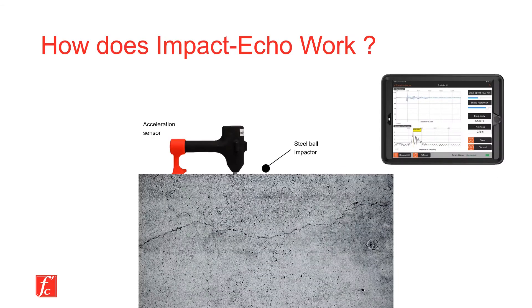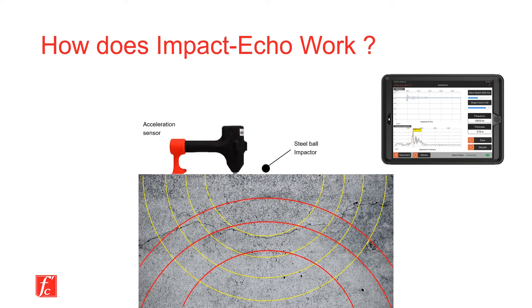The concept behind the technique is to excite concrete elements using a steel impactor and monitoring wave propagation in concrete. A commercial ImpactEcho test device has three main components: one, a set of steel ball impactors with various diameters; two, a high-precision motion transducer and data acquisition system; three, a device for displaying measurements and analysis.